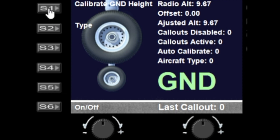S1 calibrates your ground height. Calibration is needed because the radio altitude, although fairly accurate, gives you the altitude from the sensor in the aircraft which is usually above the wheels. You can see here that the radio altitude is currently 9.67 feet off the ground, however I'm actually sitting on the ground right now, so what I need to do is calibrate the ground height.